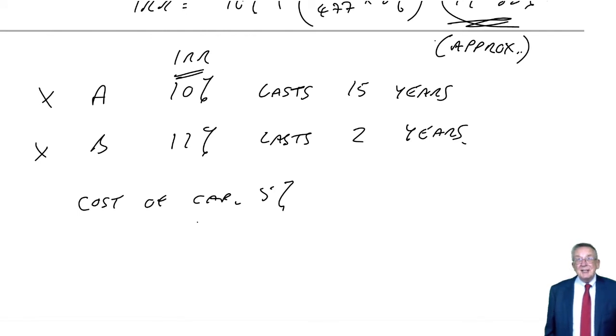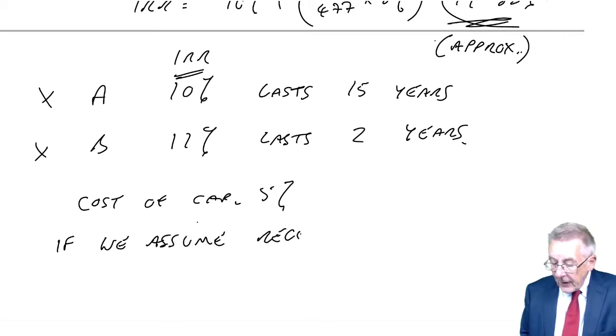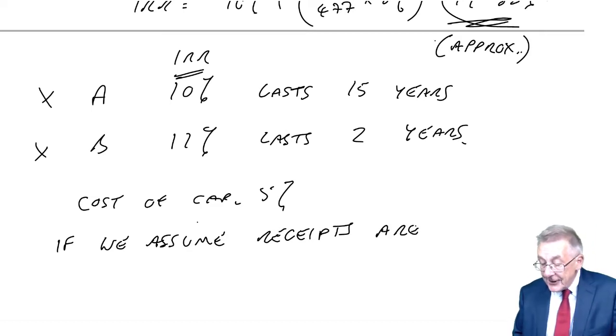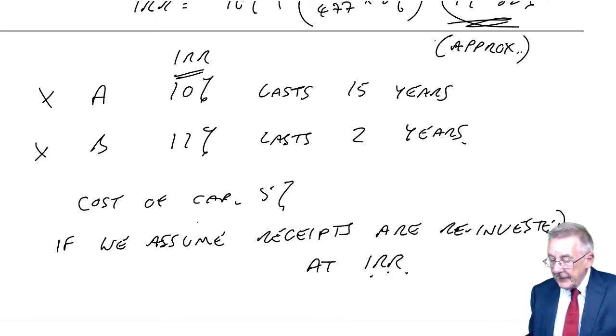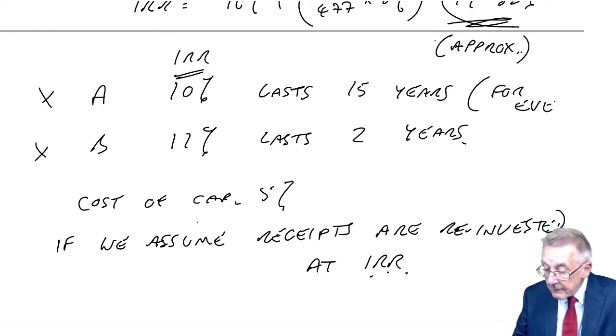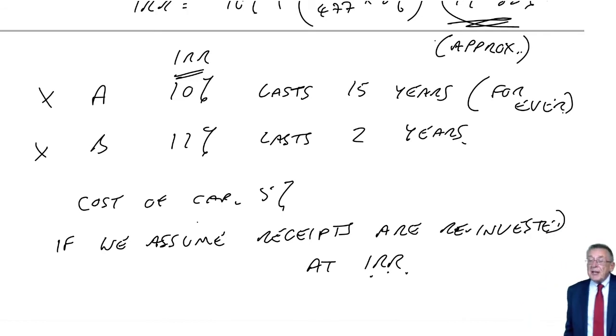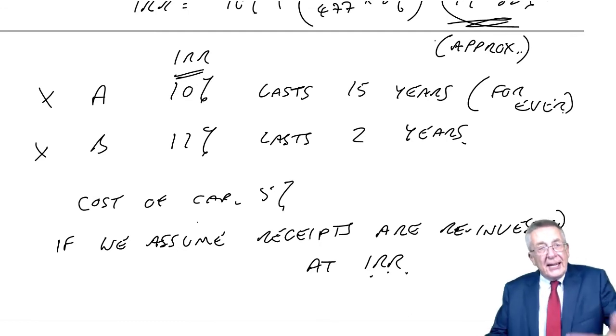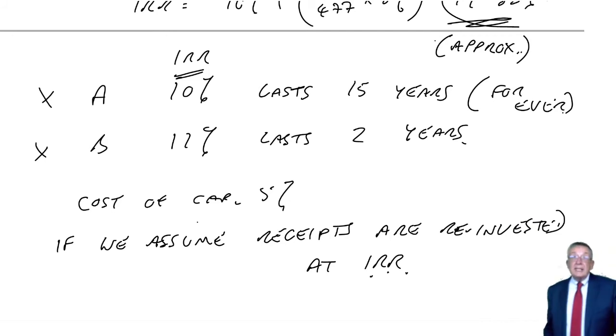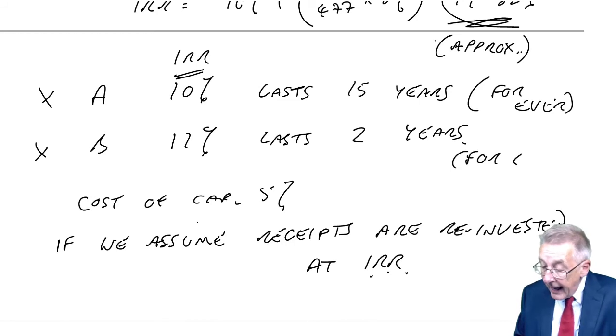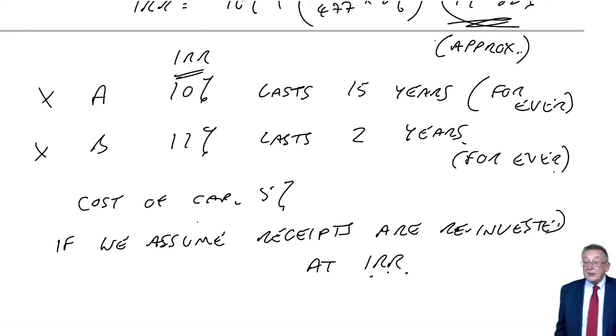The only time you could say it was better is this: if we assume the receipts for both projects are reinvested at the IRR. If we assume that, just think about it. Do project A, you get 10% for 15 years, but as the money comes in, if you could carry on investing the money again at 10%, then effectively you'd end up getting 10% forever. And similarly, project B, if we could assume that as the money came in, we could then invest it again in another similar project, and always be getting 12%, then effectively we'd be getting 12% forever.